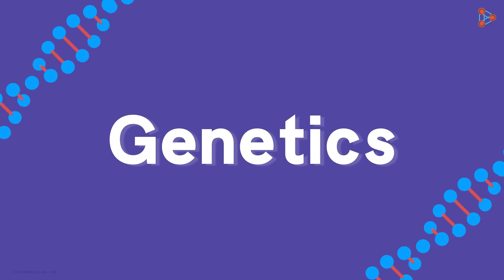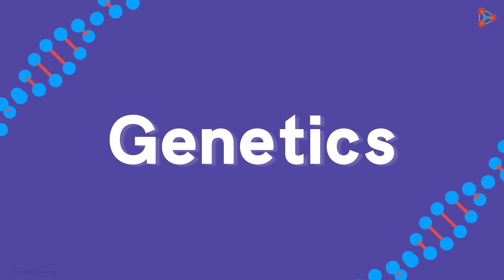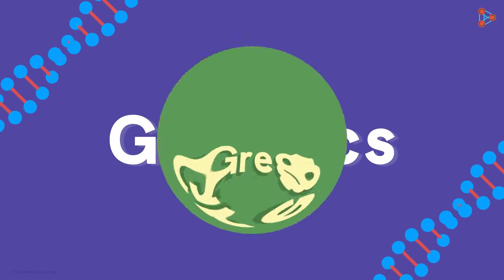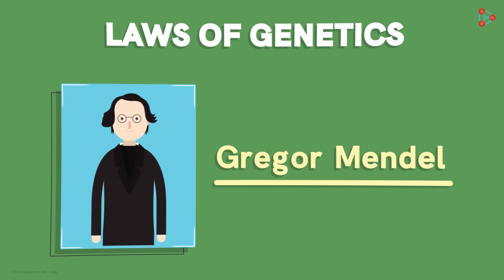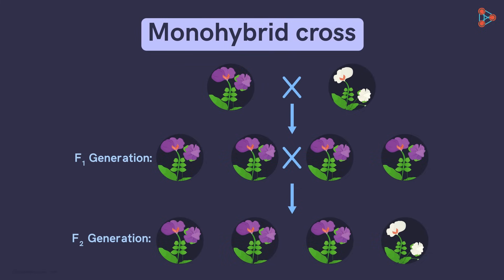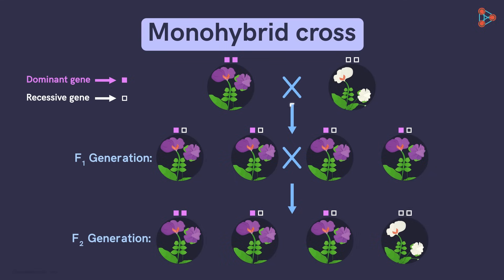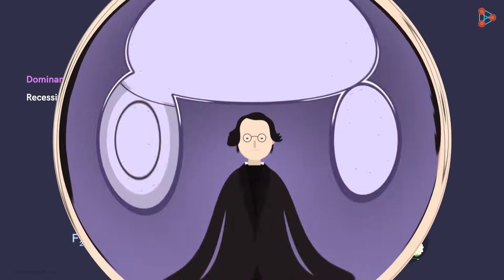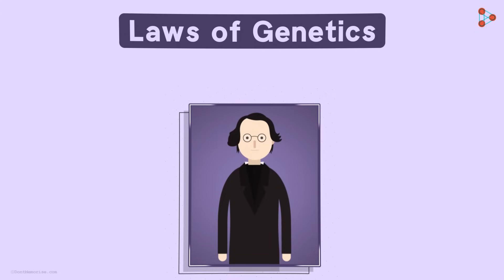The study of genetics is incomplete without understanding the laws put forth by Mendel. After his experiments of monohybrid and dihybrid crosses, Mendel concluded that there are certain factors which are passed from one generation to the other. He explained this better with the help of his first law in genetics, called the Law of Segregation.